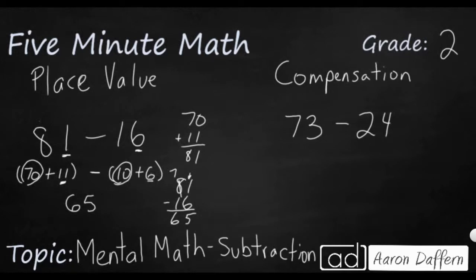Look at this example of 73 minus 24. This ones digit in the first number is just a little bit too small. It's a little bit smaller than the ones digit in the second number. Well, compensation says let's just change one of the numbers. So I'm going to change this first number. I'm going to add one. And we're going to have to keep track of what we've done. So we're going to add this one. And we're going to say that's 74. Well, 74 minus 24. That's a lot easier.